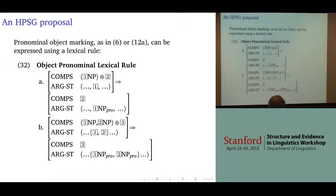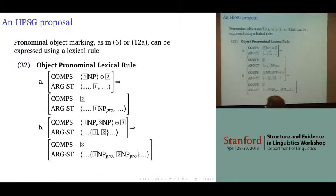Either or both of the arguments — or the three arguments in one of these three-object constructions — could be realized using a pronominal marker. Do you get three pronominal markers? Yes, you do.